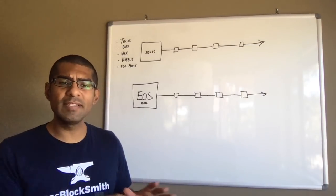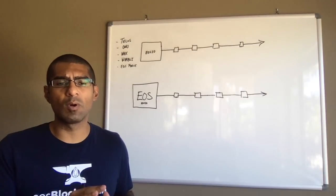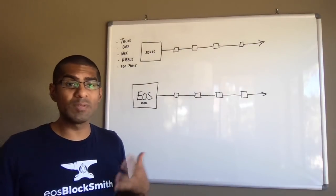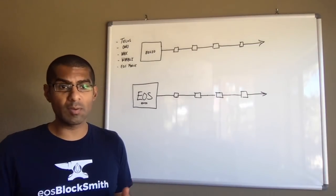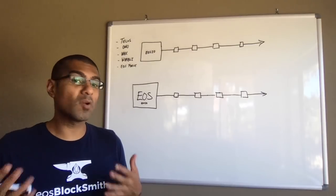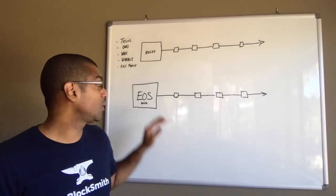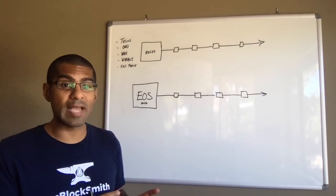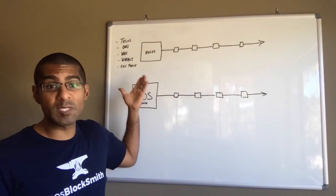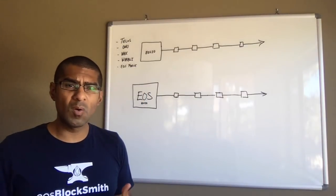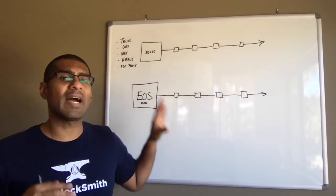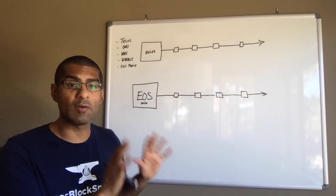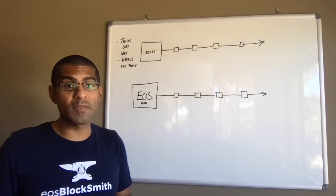Now, all of these code forks of EOS or alternative EOS.io blockchains are going to have their own set of rules and potentially their own block producers. They also may or may not credit people who have EOS tokens or have been holding EOS tokens since the Genesis snapshot with some tokens on their respective networks. So it's important that you keep a loose eye on all the developments that are happening on these EOS.io forks because it may be worth something to you.